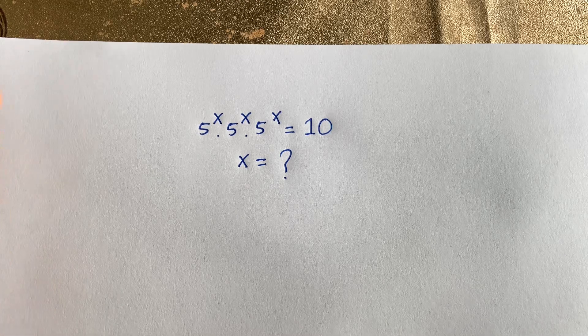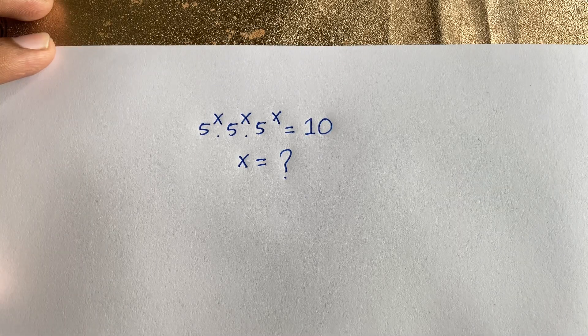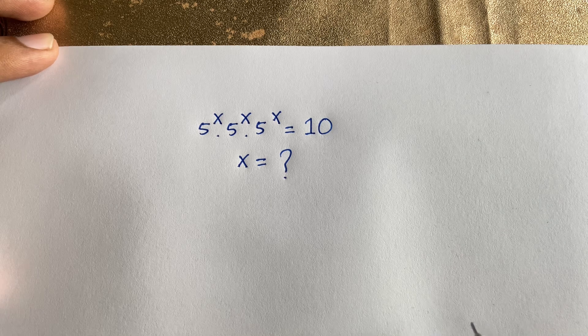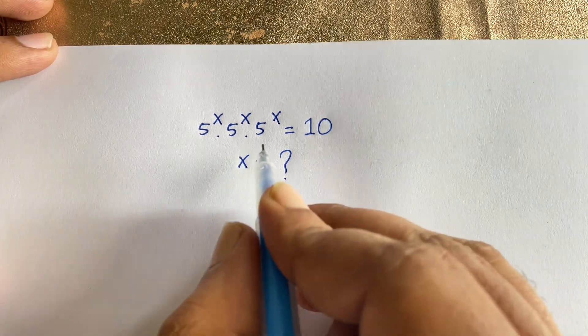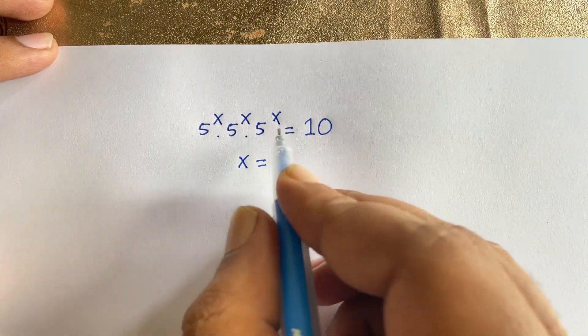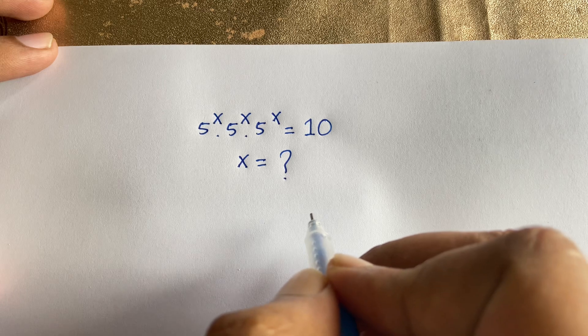Hello everyone. In this video we have solved this interesting math olympiad question: 5 to the power x times 5 to the power x times 5 to the power x is equal to 10. What is x?